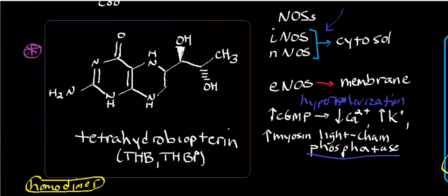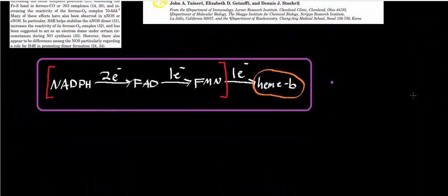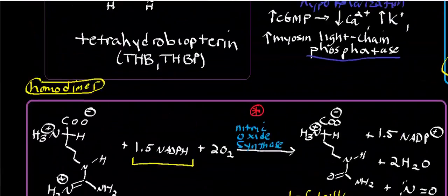To really understand this enzyme, we have to look at its organic and inorganic mechanism. Unlike cytochrome P450, nitric oxide synthase does not need an external electron protein source — the reductase domain is built into the enzyme. Electrons come in from NADPH, reduce FAD, FAD transfers electrons one at a time to FMN, and FMN transfers electrons one at a time to heme B. This is the flow of electrons in nitric oxide synthase — it's self-sufficient in terms of electron flow.